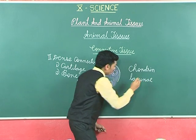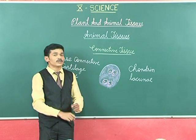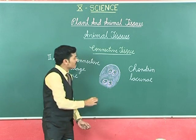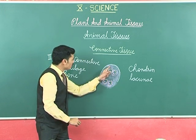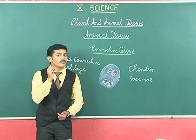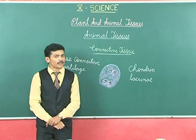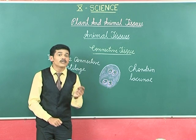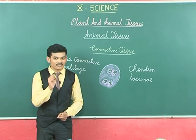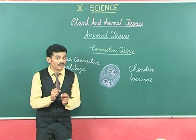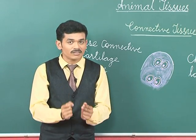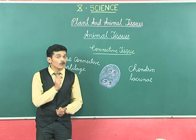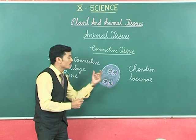Lacunae are the sites where chondrocytes are present. The matrix has ground substance and fibers, but we cannot see the thread-like fibers even under a microscope. This is because the refractive index of both the fibers and the ground substance is the same, so we cannot distinguish them separately, which is why the fibers are not visible in the matrix.